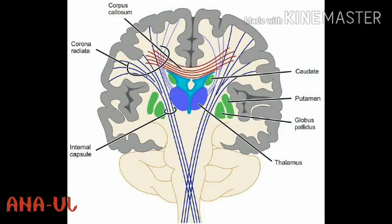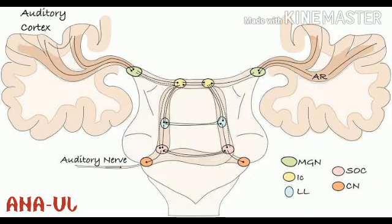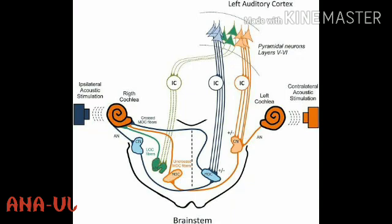Next we are going to learn about projection fibers. The projection fibers connect the cerebral cortex with the lower parts of the brain, the brainstem, and the spinal cord in both directions. The corticopetal or afferent fibers include the geniculocalcarine radiations from the lateral geniculate body to the calcarine cortex, the auditory radiation from the medial geniculate body to the auditory cortex, and the thalamic radiation from the thalamic nuclei to specific cerebrocortical areas. The corticofugal or efferent fibers proceed from the cerebral cortex to the thalamus, brainstem, or spinal cord.